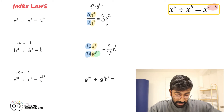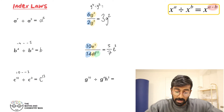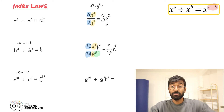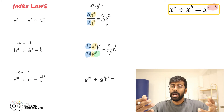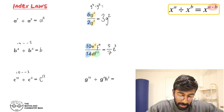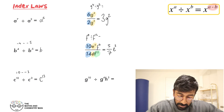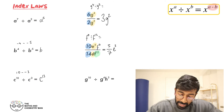Now look what happens: you take away the powers — that's F to the 0 divided by F to the 12 — so we do 0 take away 12. What do we get? F to the minus 12.